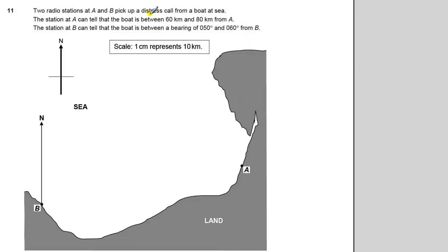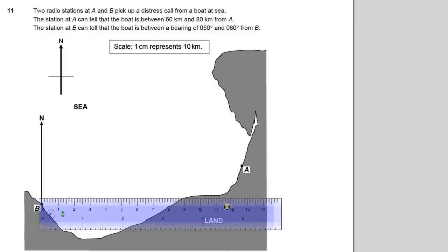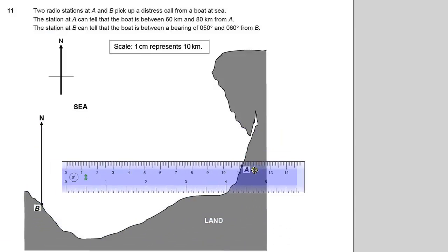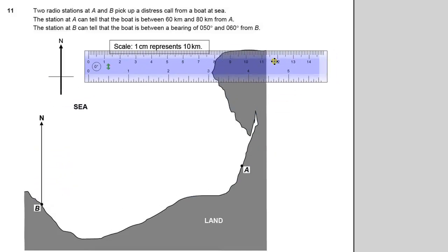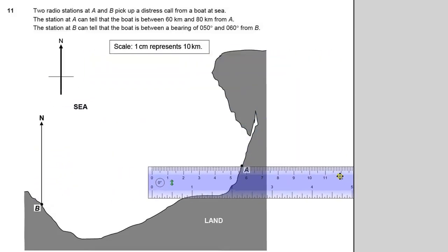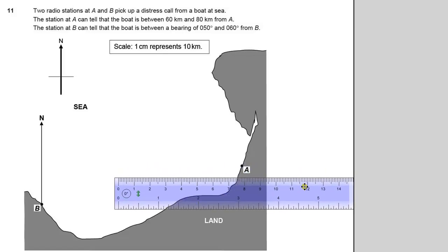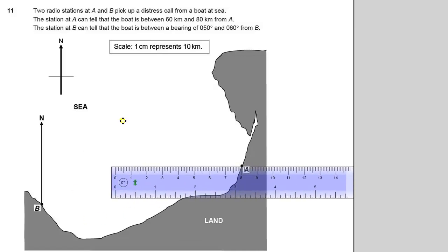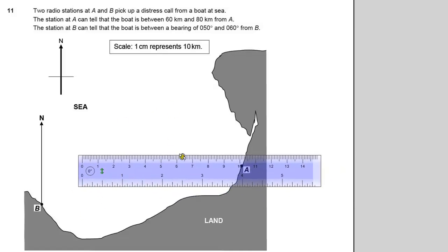So if it's going to be between 60 and 80 kilometres from A, what we need to do is to measure all the points that are between 60 and 80 kilometres. Now, I could get a ruler out and start trying to do that, 1 centimetre is 10, so we're going between 6 and 8 centimetres away from A. But it's a bit tricky to put all the points on there. It's nowhere near as accurate as it would be if I used a compass.